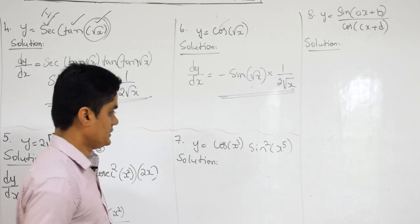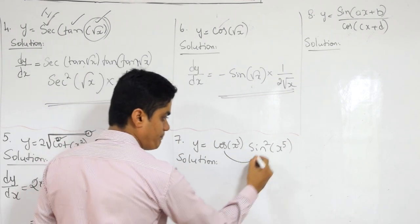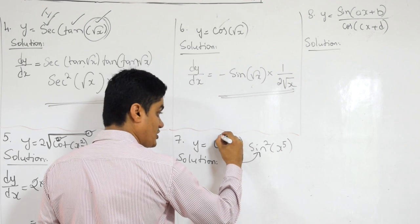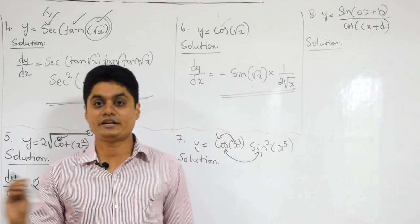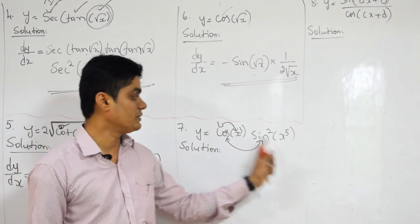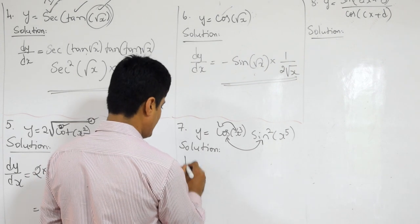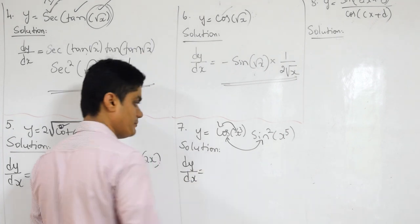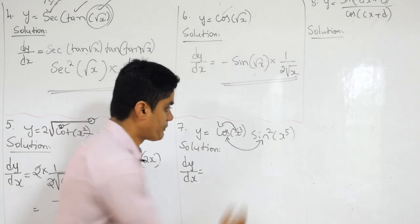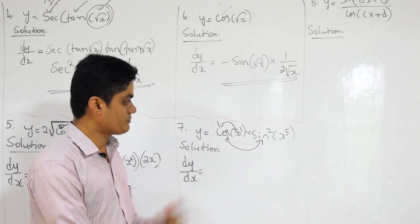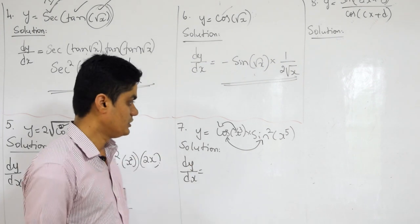Next one — this is a little difficult. Why? Because both product and composite functions are there. Up to now you just applied chain rule, but here product rule is required as well as chain rule. Observe carefully. You can start differentiating directly. Which rule should you use first — chain rule or product rule? Outside function is product, and inside that we have composition. So first product rule, then chain rule.